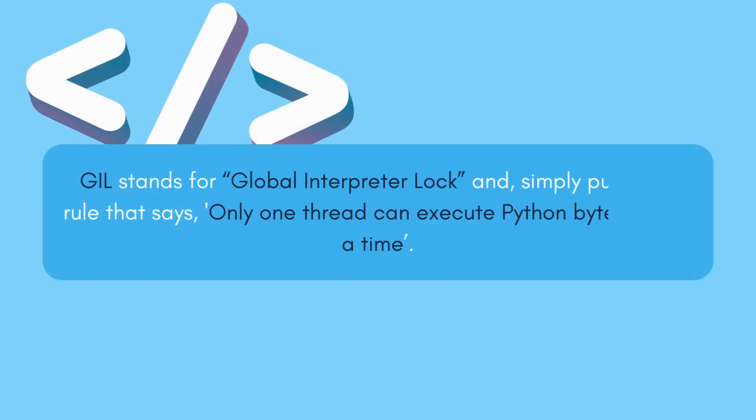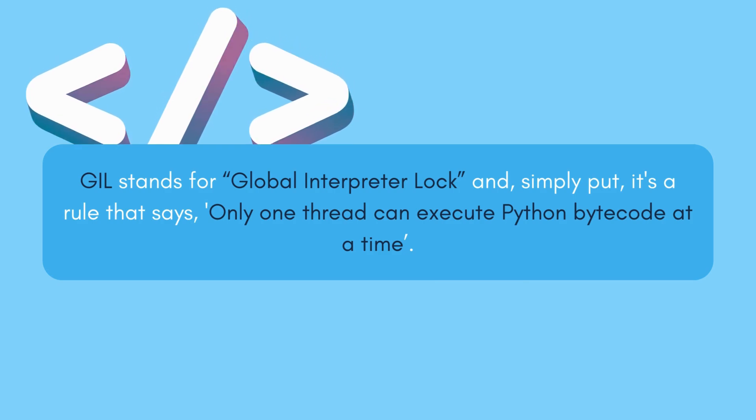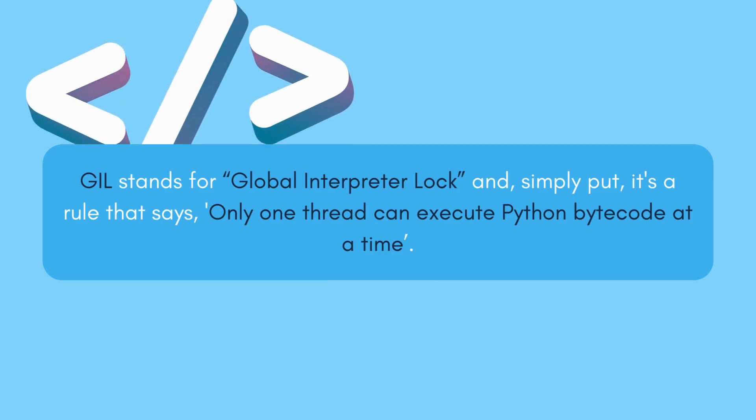What's this GIL thing? It stands for Global Interpreter Lock. And simply put, it's a rule that says only one thread can execute Python bytecode at a time.